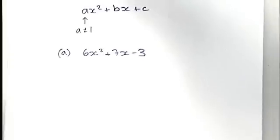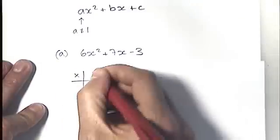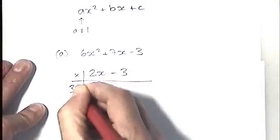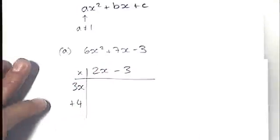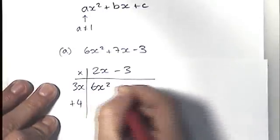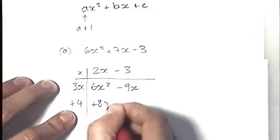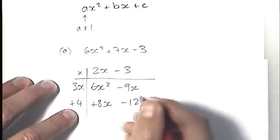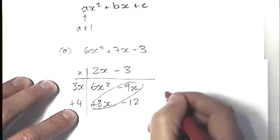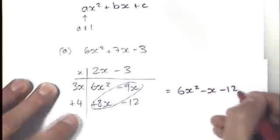If you're familiar with the grid method, you would be looking at multiplying a couple of brackets. Let's say they were 2x minus 3 and 3x plus 4. You would multiply your brackets out, put your answers in the grid, and then you would simplify those two together to give you an answer, 6x squared minus x minus 12.